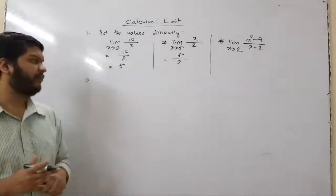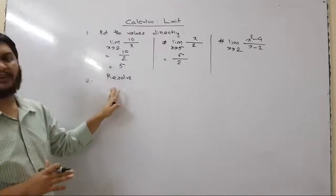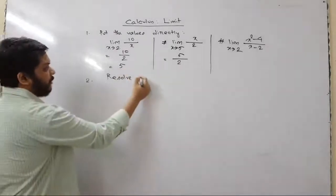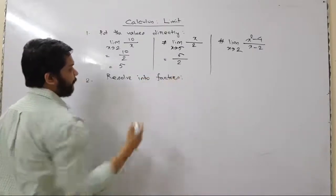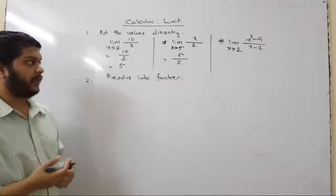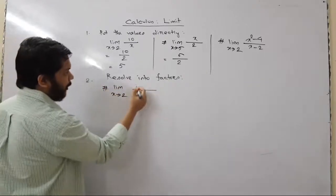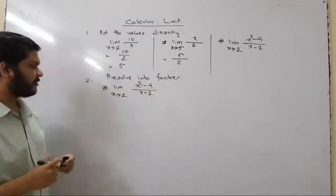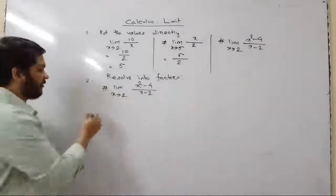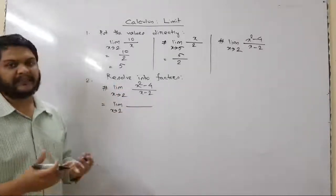The next technique is resolving into factors. Direct substitution will be used at the end once the indeterminate or undefined form is cleared. When we get such forms, we should try to factorize. For example, with limit as x tends to 2 of (x² - 4) divided by (x - 2), putting x equals 2 gives 0 in both numerator and denominator, so we proceed to factorization.